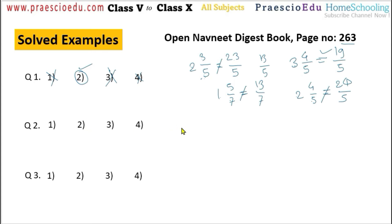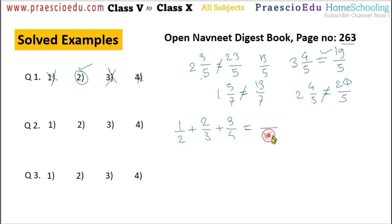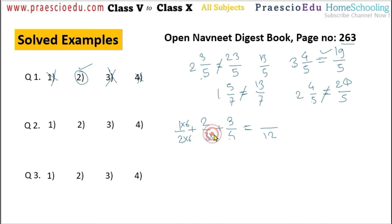Question number 2: we need to add fractions — 1 by 2 plus 2 by 3 plus 3 by 4. The denominators are different, so we will find the LCM of 2, 3, and 4, which is 12. To get 12 in the first fraction multiply by 6, in the second multiply by 4, and in the third multiply by 3. Apply the same multiplication to each numerator as well. Now all denominators are 12.